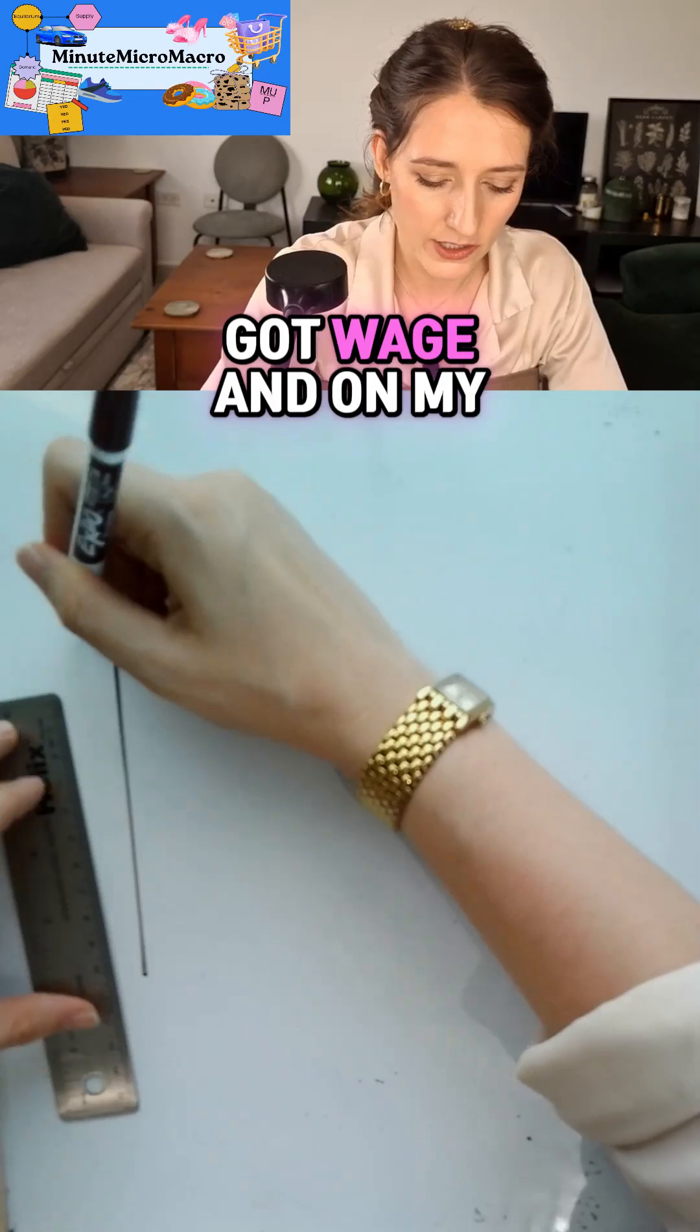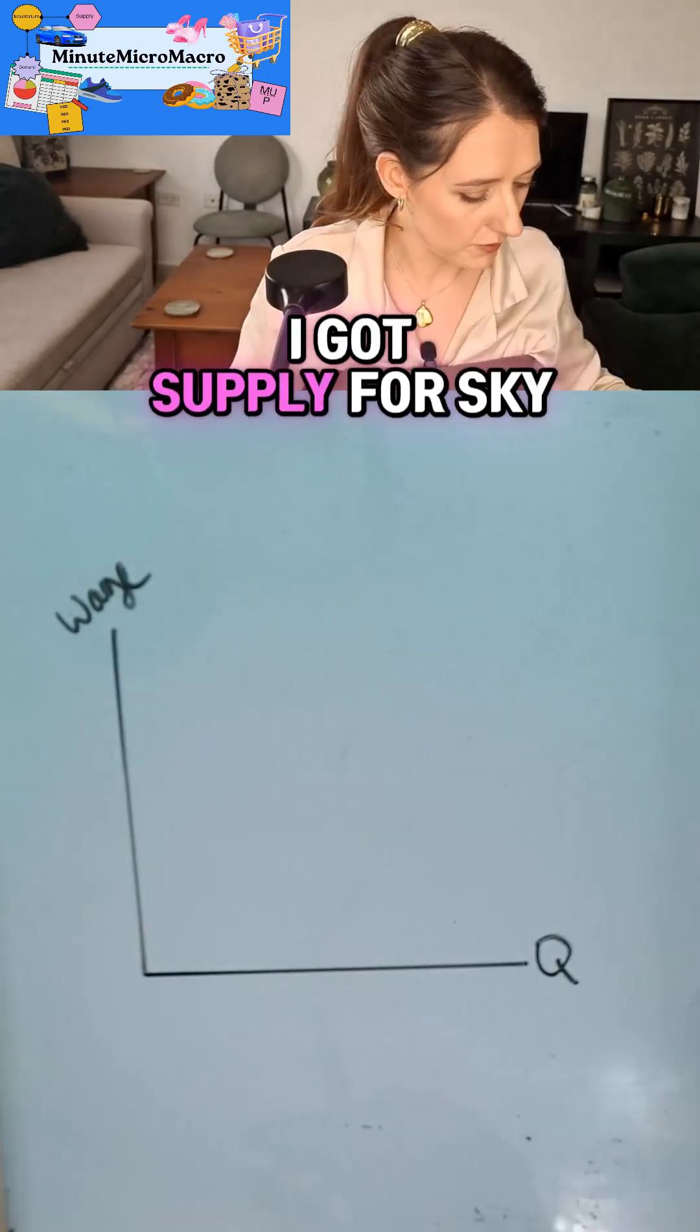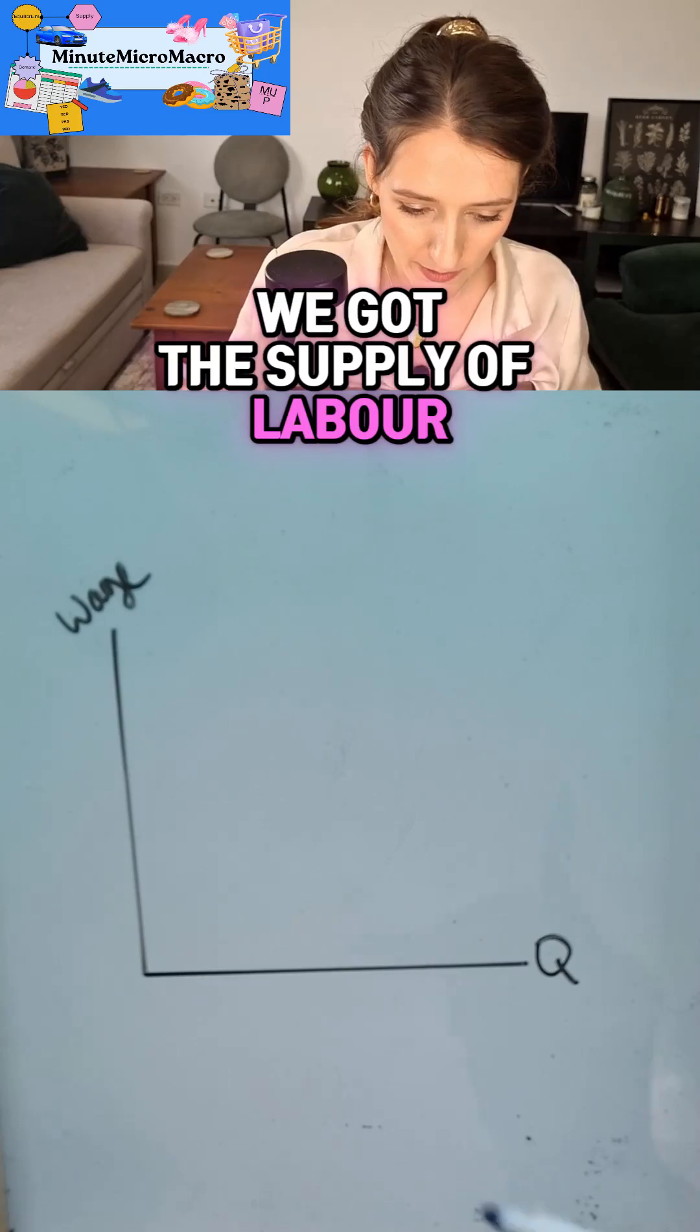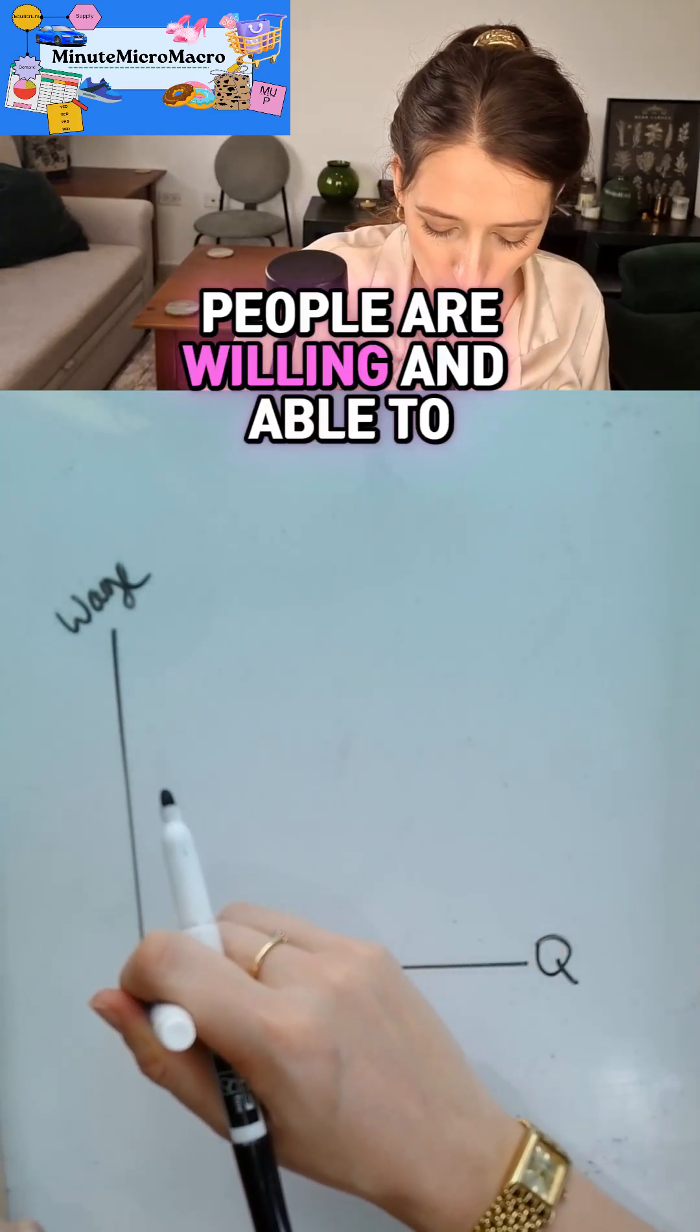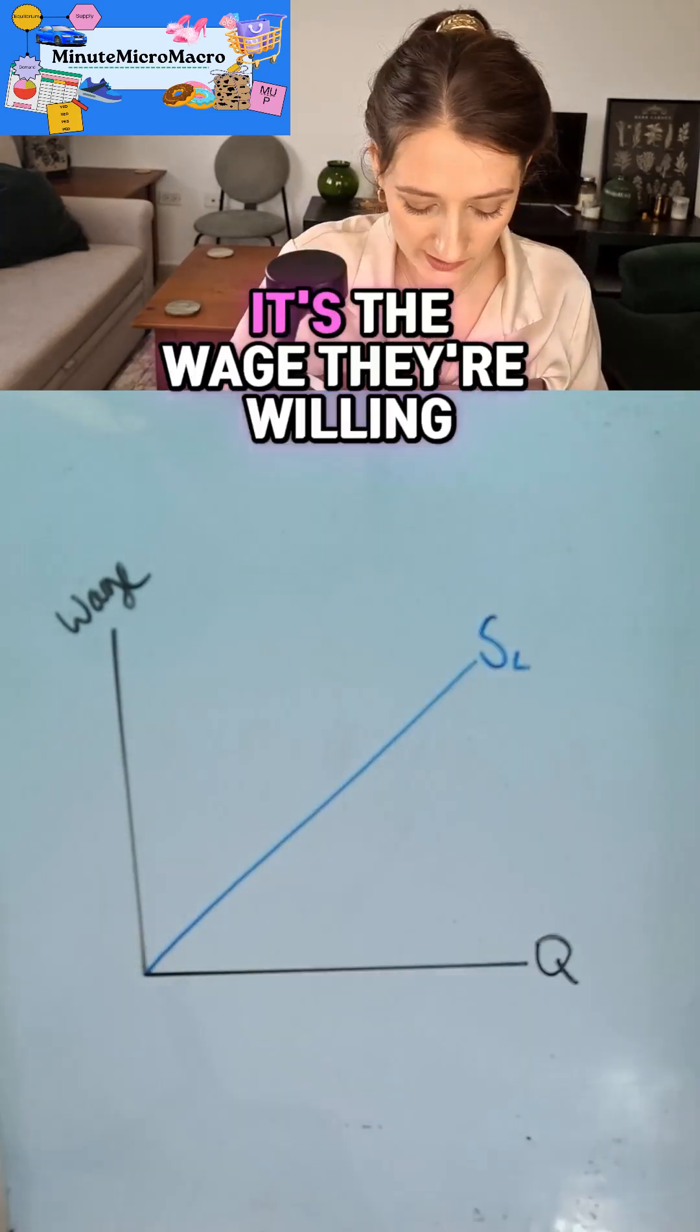We're going to think about it as a story. On my y-axis I've got wage and on my x-axis I've got quantity. Now I've got supply to the sky, we're going to think about the supply of labour. So this is the amount people are willing and able to work for, it's the wage they're willing to accept.